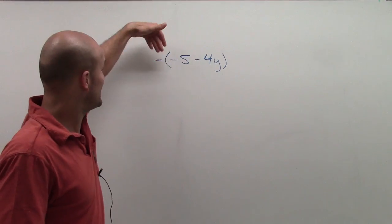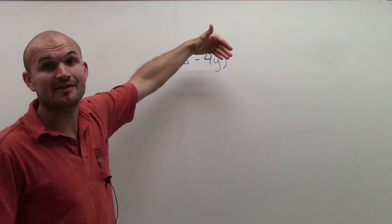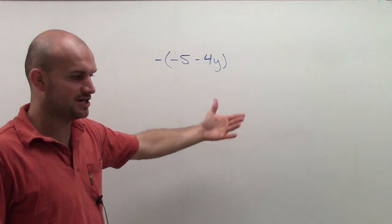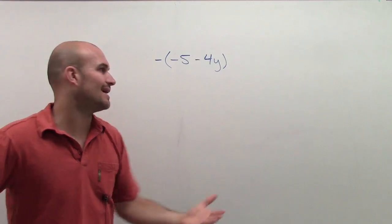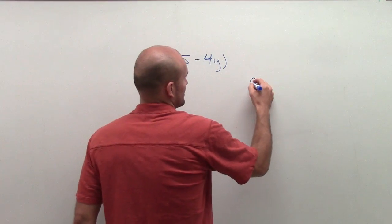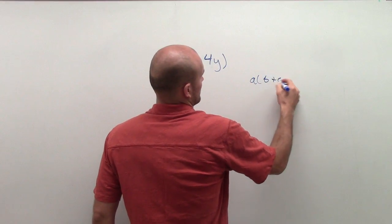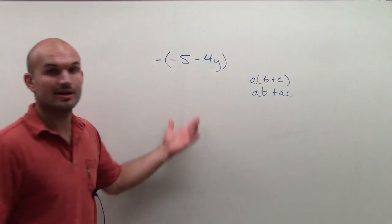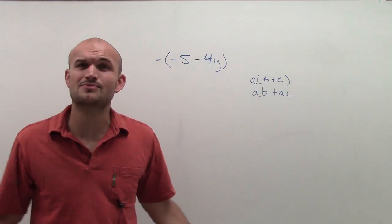So what do we do now when we have a negative times negative 5 minus 4y? And this begins, this starts a problem because students understand, alright, I get the distributive property, right? But then what do I do when I don't have a number? I have this negative sign. What does this work out?